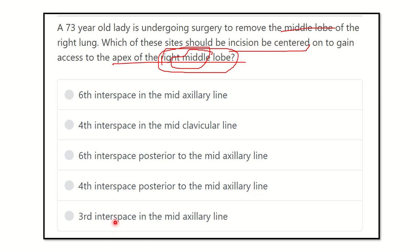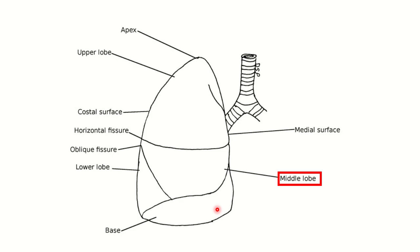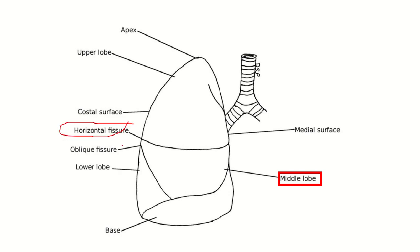First, let's look at the anatomy of the right lung. Here we can see the right lung — the left lung is removed from the diagram. The right lung has an upper lobe, middle lobe, and lower lobe. There is also a horizontal fissure and an oblique fissure, and these two fissures divide the right lung into the upper, middle, and lower lobes.